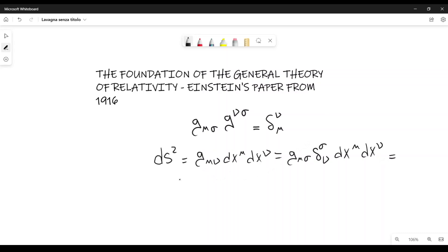And then, this can also be rewritten, since we know this property, like this, g mu sigma, and then instead of delta sigma nu, we can rewrite g mu tau times g sigma tau dx mu dx nu.